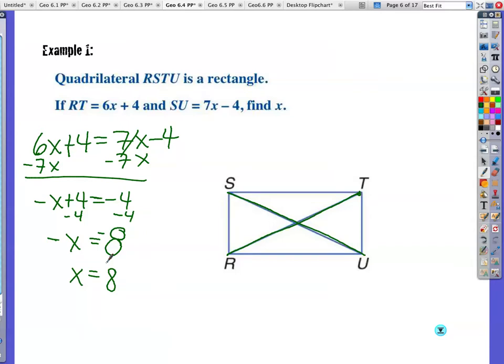Now let me double check. 8 times 6 is 60. 6 times 8 is 48 plus 4. Is that the same as 7 times 8, which is 56, and subtract 4. This would give me 52, and this would give me 52. So the diagonals are definitely congruent.